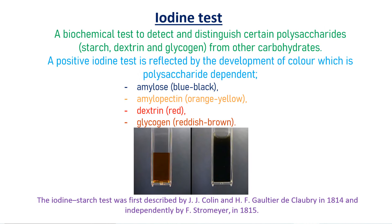The iodine test is a biochemical test to detect and distinguish certain polysaccharides such as starch, dextrin, and glycogen from monosaccharides, disaccharides, and polysaccharides such as cellulose and hyacin. A positive iodine test is reflected by the development of color which depends on the type of polysaccharide. Amylose gives blue-black color, amylopectin gives orange-yellow color, dextrin gives red color, while glycogen gives a reddish-brown color.